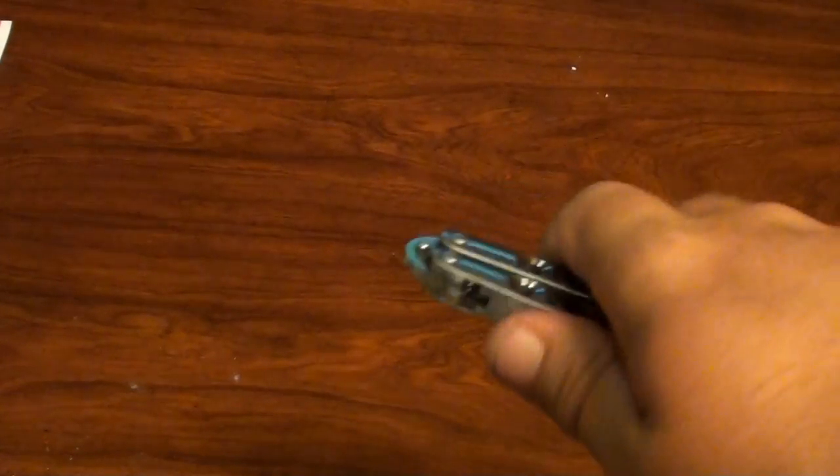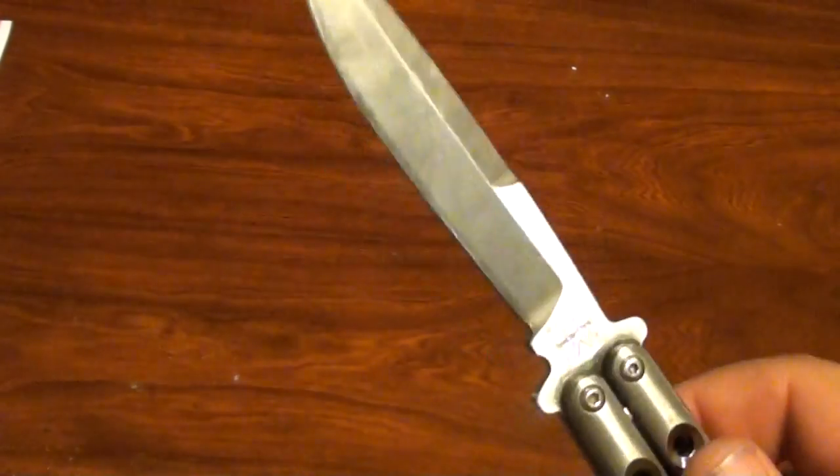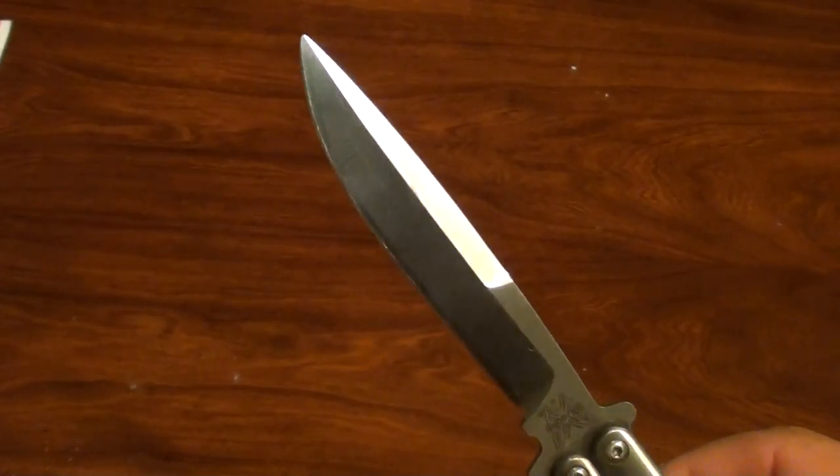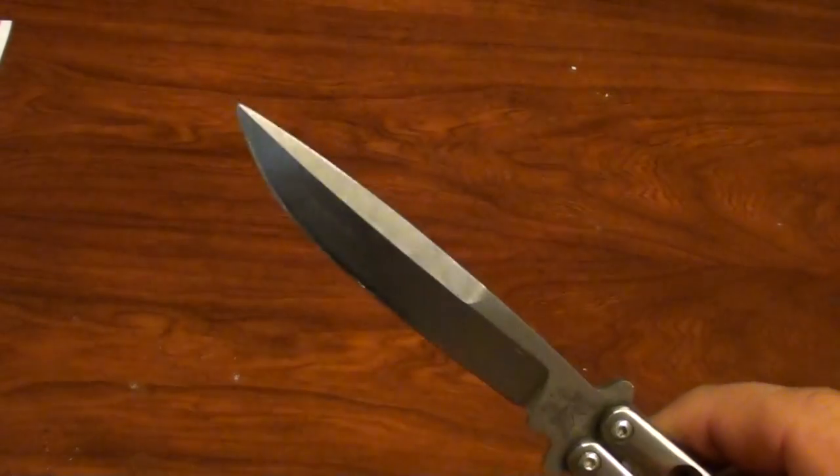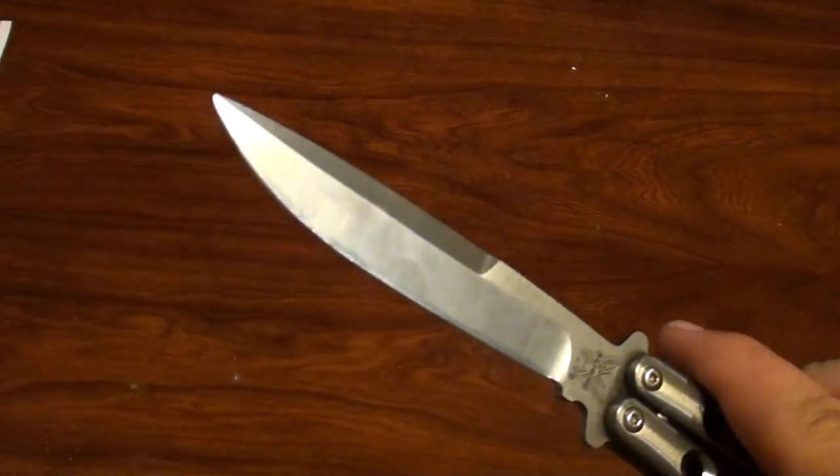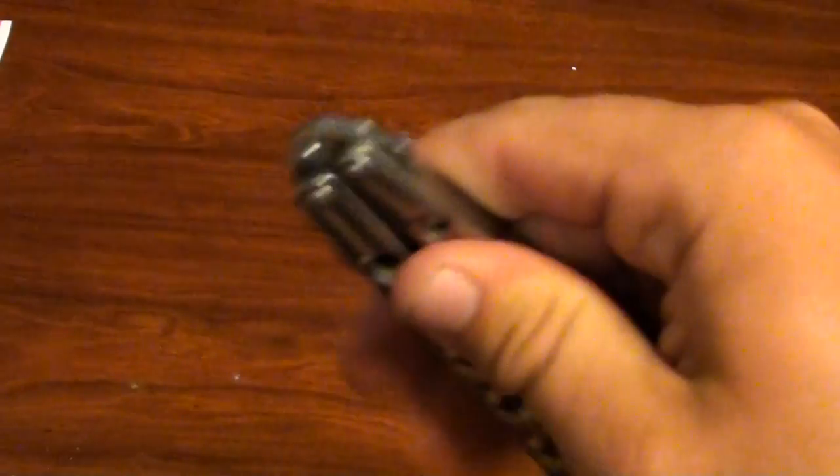But yeah, this is my trainer now. This is what I use to learn balisong tricks or flourishes, manipulations, whatever you want to call it. Trying to learn the zero gravity chaplain and I cannot get it down. I've watched several videos on it and it is not progressing pretty any well at all.